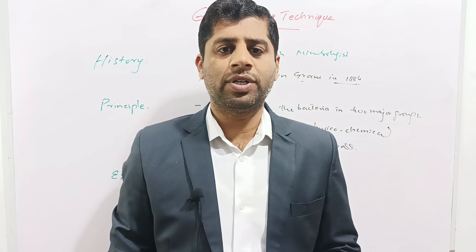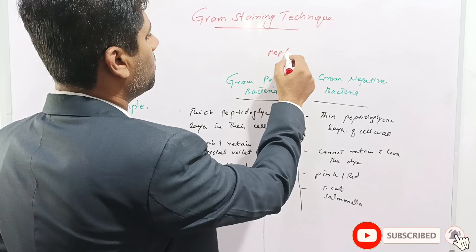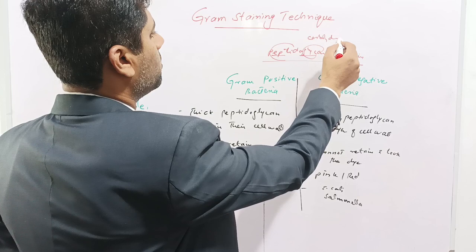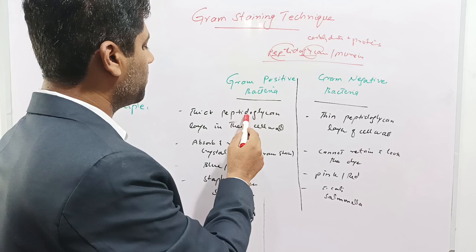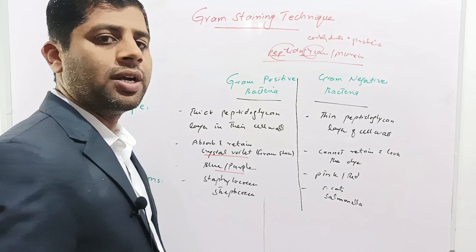The Gram positive bacteria have a thick peptidoglycan layer in their cell wall. The cell wall of bacteria is made up of peptidoglycan or murein — conjugated molecules comprising proteins and carbohydrates. In the case of Gram positive bacteria, this peptidoglycan layer is very thick, and it absorbs and retains the crystal violet dye even after washing with alcohol or acetone. Therefore, these appear blue or purple in color under microscopic view. Common examples are Staphylococcus and Streptococcus.